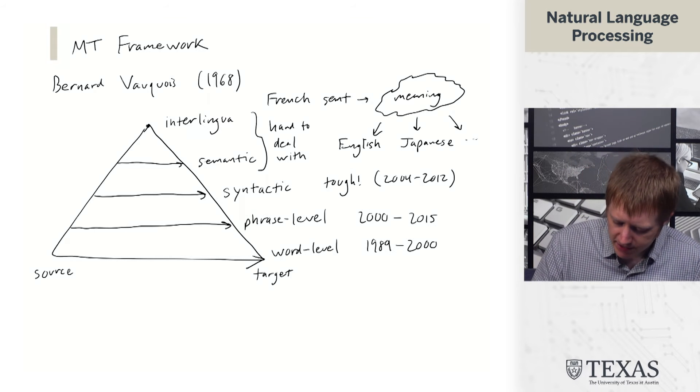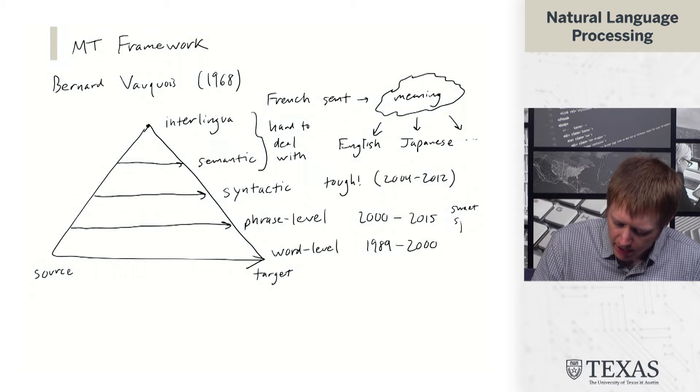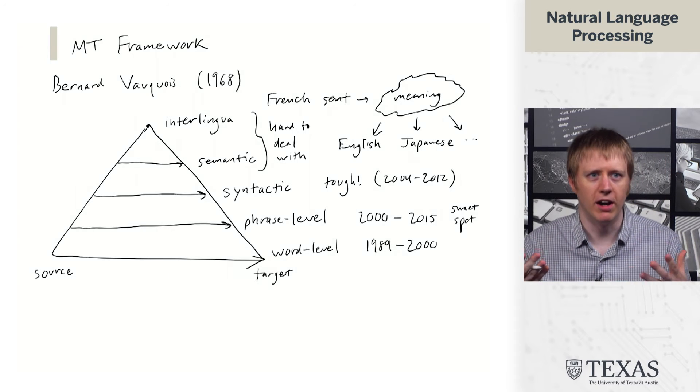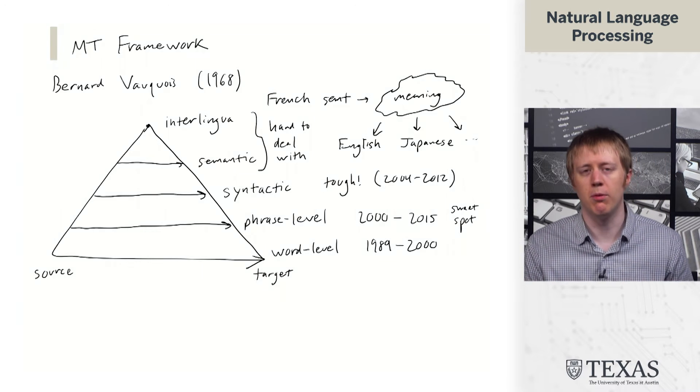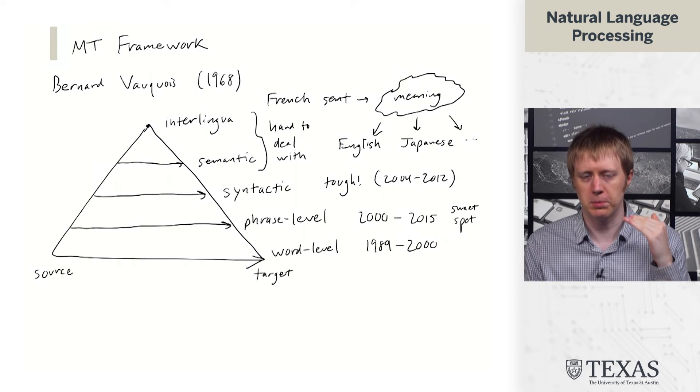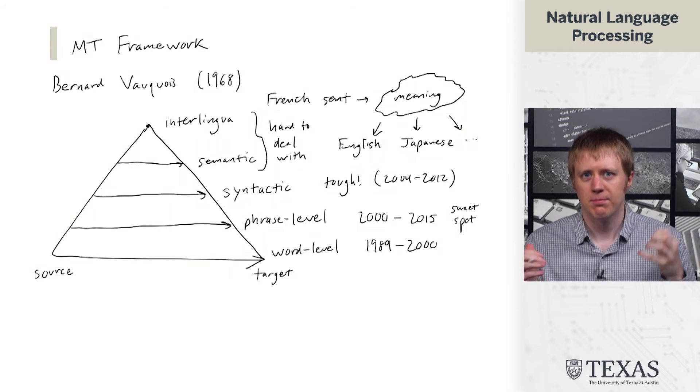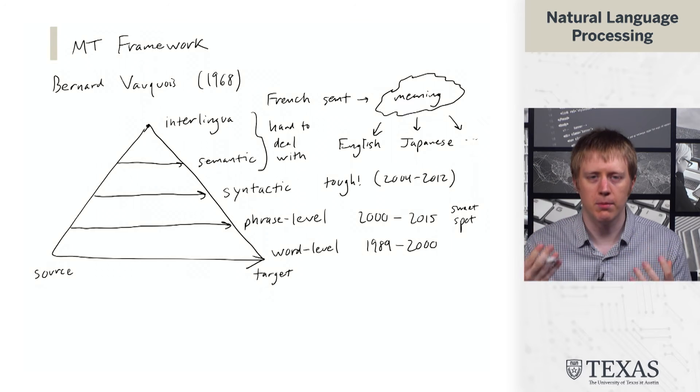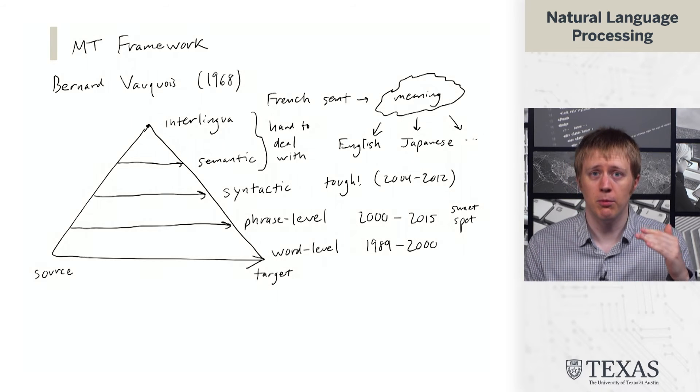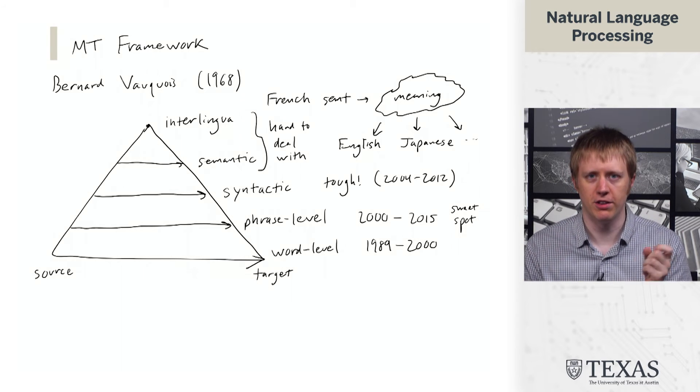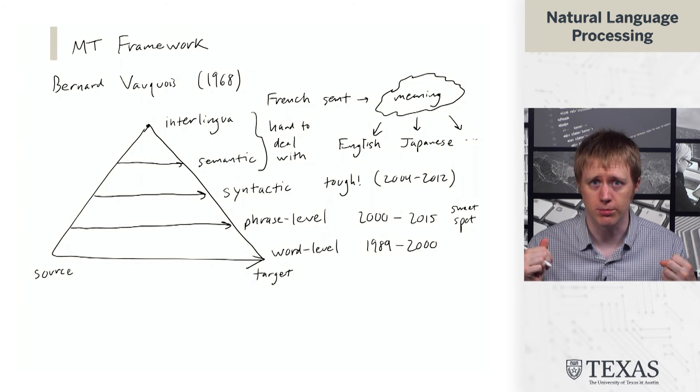But phrases are really the sweet spot, it turns out. We want to stay close to the words because that's easy from a computational machine learning modeling perspective. But we want to do a little bit better than trying to do word-by-word translation because those units are too small.